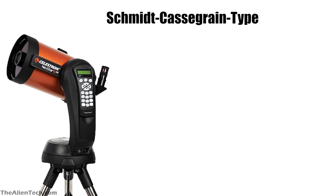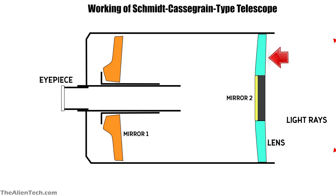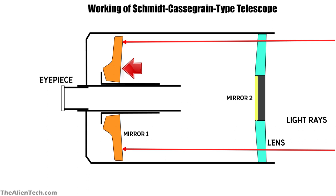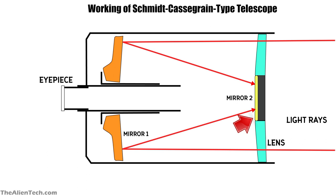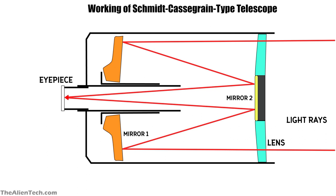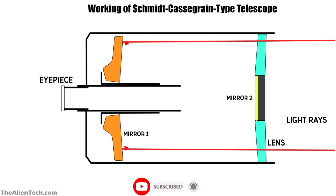A Schmidt-Cassegrain Telescope, in short form, is usually mentioned as an SCT telescope. SCT telescopes are compound telescopes — they are lighter in weight and good for astrophotography. An SCT telescope has a corrector plate at the front through which light passes and hits the concave primary mirror at the bottom of the optical tube. It reflects from the primary mirror and hits the convex secondary mirror at the front of the tube behind the corrector plate. It then reflects off the convex secondary mirror, passes through the hole of the primary mirror, and hits the eyepiece or a camera.